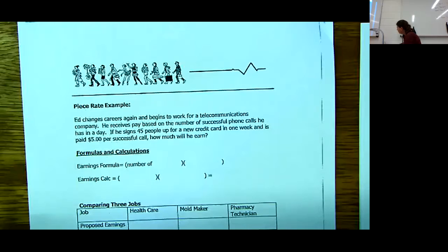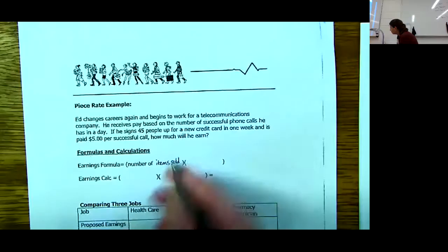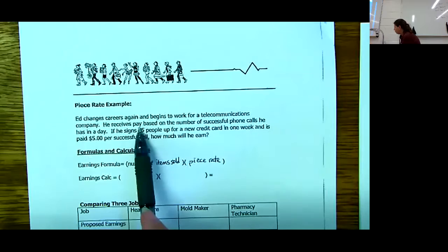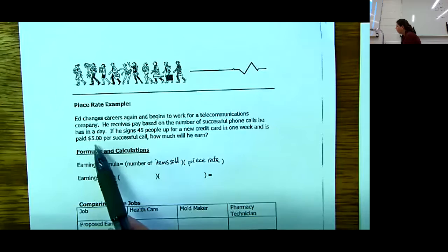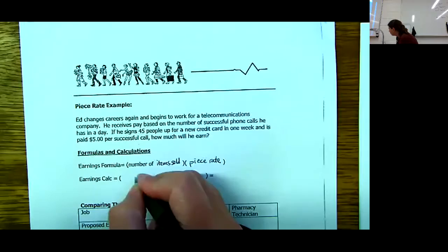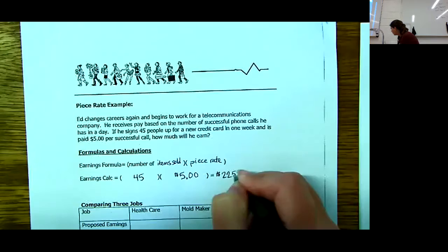The last way that somebody could get paid is piece rate. Piece rate is basically when you get paid for a certain number of items sold times the number of items. The number of items sold or successful transactions times the piece rate that you get for that. Ed changed careers again. He thinks he could do better at telecommunication. He gets $5 for every successful call that he makes. This week he successfully signed 45 people up for this new credit card. The number that he sold would be 45, he gets $5 for each of those. Ed's going to make $225 that week.